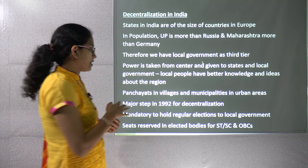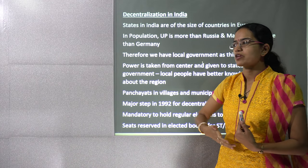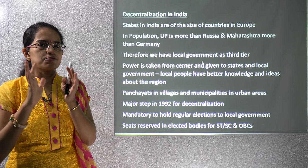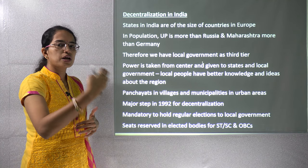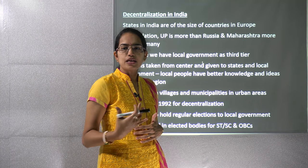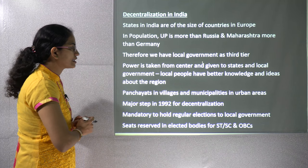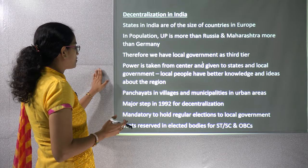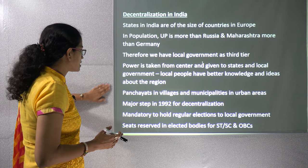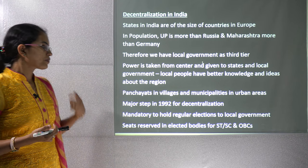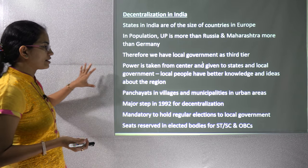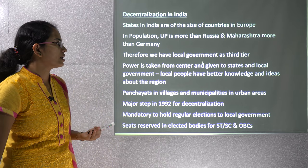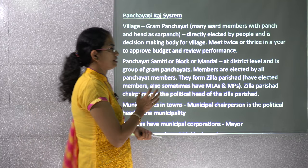Decentralization in India started with the Ashok Mehta Committee, which focused on decentralization at the rural and urban level. Under rural local bodies, one-third of seats have been reserved for female candidates. Power is being taken from the state to local people, giving them more representation and authority. It became mandatory to hold regular elections for local bodies and to have reservation for SC, ST, and women at the local level. This led to the evolution of the Panchayati Raj system.